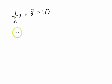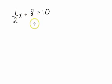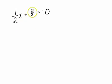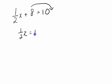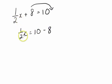Another example: this time we have a fraction. One-half x plus 8 equals to 10. We can solve it just as before — just bring the 8 over. So this becomes one-half x equals to 10 minus 8. The first step is to make the variable the subject.